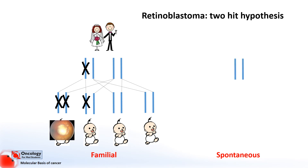In spontaneous tumours, the person has two normal copies in every single cell of their body to start with. They need to gain two spontaneous mutations, one in each copy of the gene in a single cell, the chances of which are far lower, meaning that it usually requires more time for this to occur. And this is what you see in real life: people with inherited mutations get tumours at a much younger age and may develop more than one tumour. Those with spontaneous tumours on average develop them later in life and almost never have more than one tumour. This two-hit hypothesis applies to the majority of tumour suppressor genes.